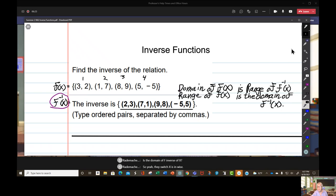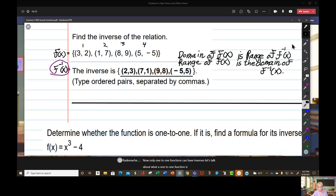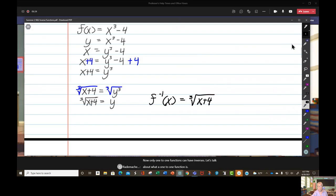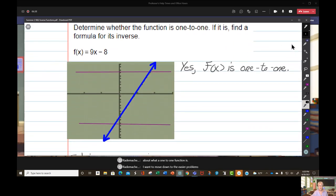Now, only one-to-one functions can have inverses. Let's talk about what a one-to-one function is. I want to move down to the easier problems before I do that harder problem, so I'll go back. Here we have a question. Determine whether this function is one-to-one. If it is, find a formula for the inverse. F of x equals 9x minus 8. Before I even bother to try to find an inverse, I'd better figure out if this is one-to-one. I do that with, are you ready? Drum roll, the horizontal line test.